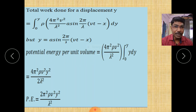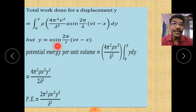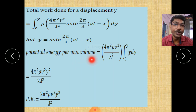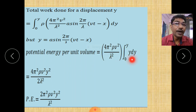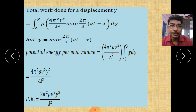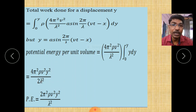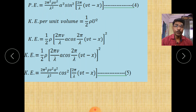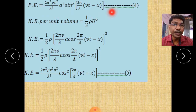For simplicity, substitute y = A sin(2π/λ)(vt − x). The total work done for a displacement y is obtained by integrating from 0 to y. Taking constants outside and integrating y dy, the integration gives y²/2. Therefore, the potential energy per unit volume is obtained, and substituting the value of y² gives the final expression for potential energy.